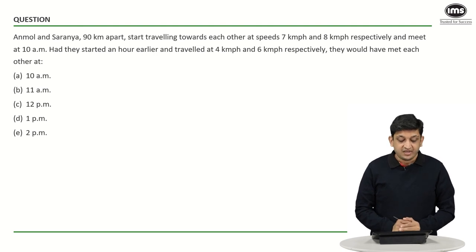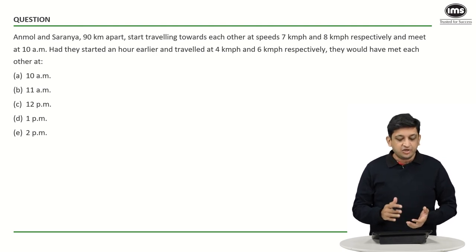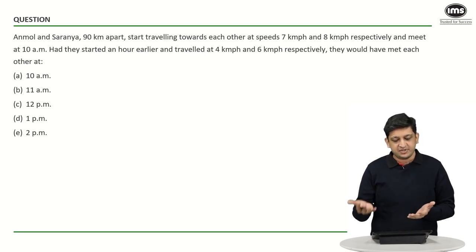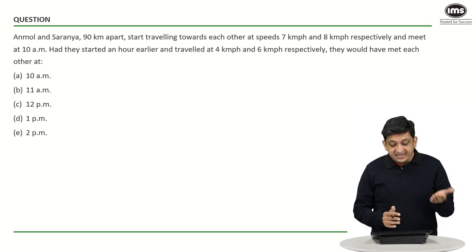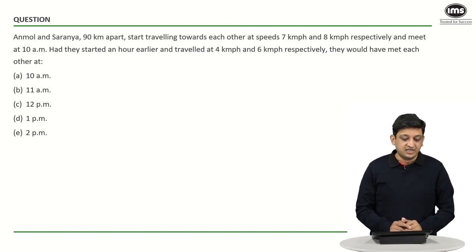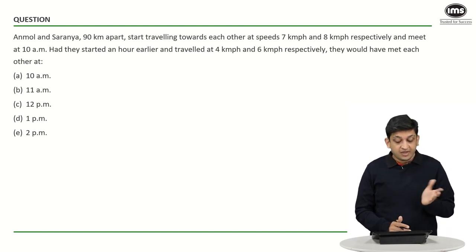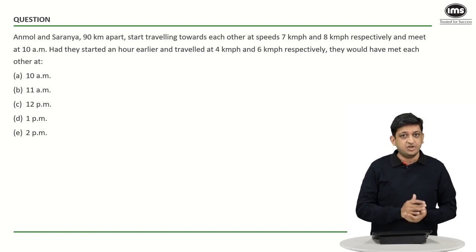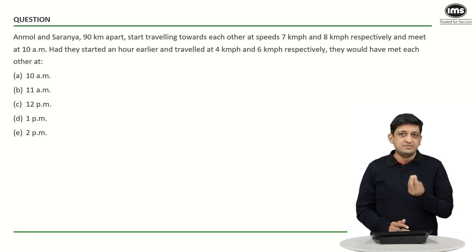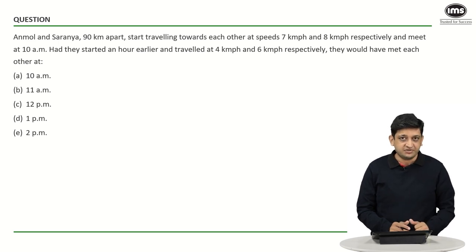Coming to the first question: Anmol and Saranya, 90 kilometers apart, start traveling towards each other at speeds of 7 kilometers per hour and 8 kilometers per hour. In the second case, had they started one hour earlier and their speeds changed to 4 kilometers per hour and 6 kilometers per hour, then when would they have met each other? In the first case, they are meeting each other at 10 a.m. There is one simple way of doing this — put everything in the form of equations and solve those equations.